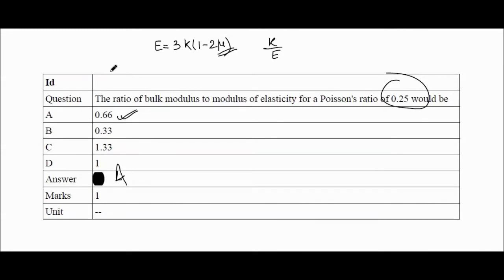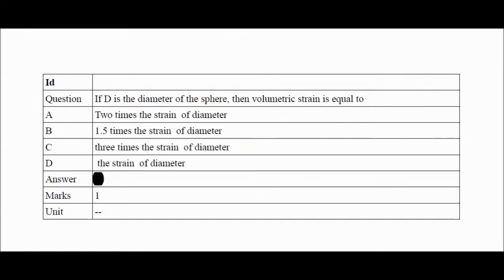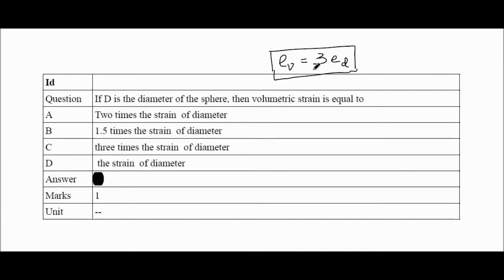This next question is very important: diameter of a sphere is given as d. What will be the volumetric strain? You should know that volumetric strain is three times the linear strain of the diameter. So directly, the answer is C.